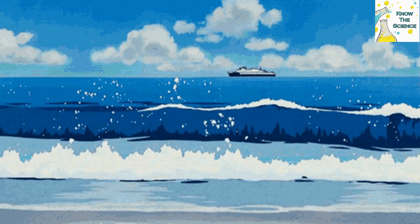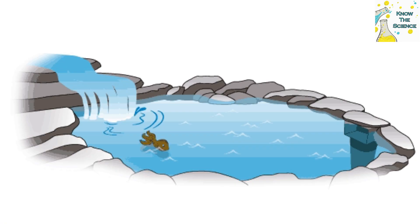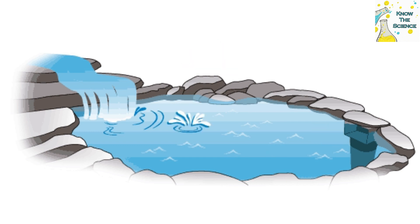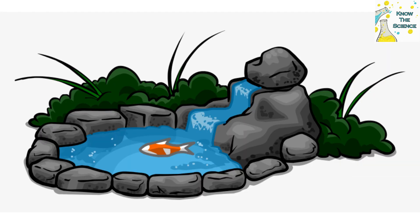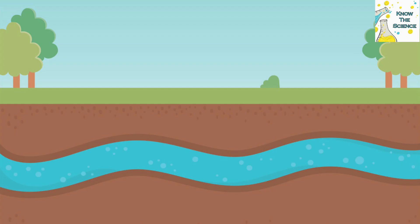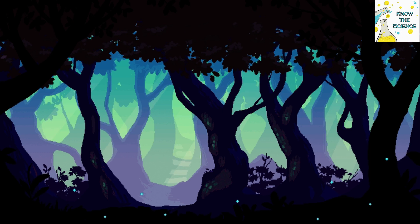Inland waters are also acidifying at a very rapid rate, which is particularly worrying as although only one percent of the planet's water is fresh, forty percent of fish live in it. This acidification increases the concentration of metal ions, mainly aluminium ions, which could lead to the death of many fish, amphibians, and aquatic plants. In addition, heavy metals are transported to underground waters, which become unsuitable for consumption.